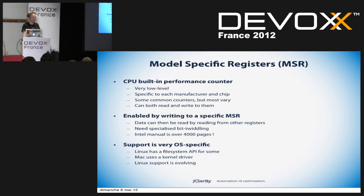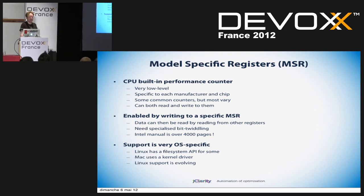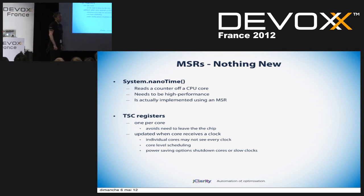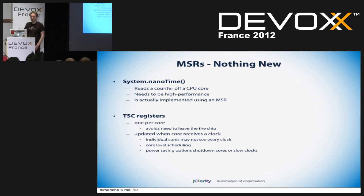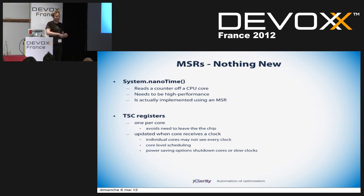These model-specific registers sound exciting and new, but you've actually all used them with System.nanoTime(). Does anybody know how nanoTime is implemented? It uses the TSC — the timestamp counter — which counts clock cycles. It is, in fact, a model-specific register; it just happens to be a very standard one. It reads the counter off the core, and you have one TSC register per core. When your core cycles, you update the counter, and something else can read that register back.